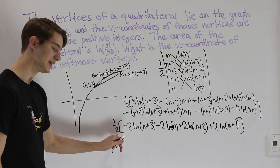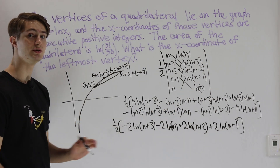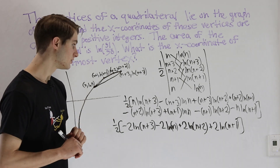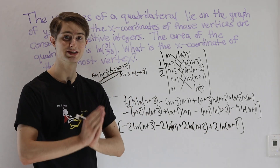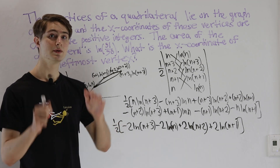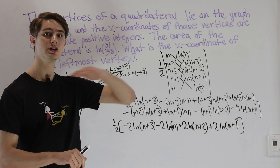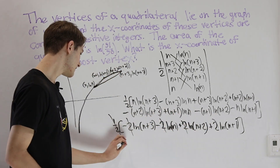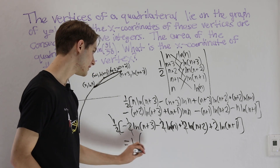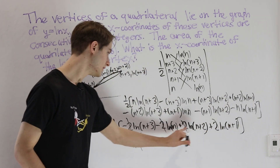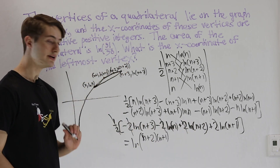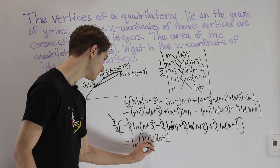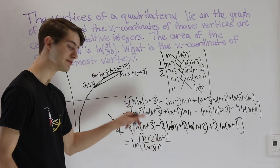There's a factor of 2 in everything, which cancels with the one-half. Now we group the natural logs together. When two natural logs are added, that's the same as the natural log of the product of their inputs. When we subtract, the second input goes in the denominator. So expanding everything, we get the natural log of (n+2)(n+1) divided by n(n+3) — that's the area for an arbitrary integer n.